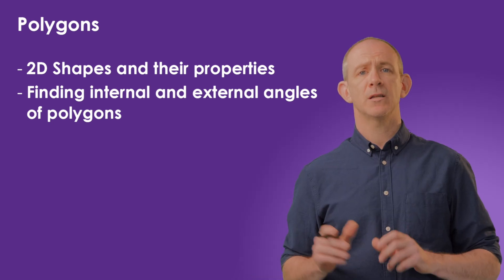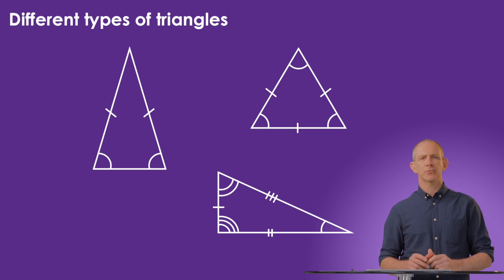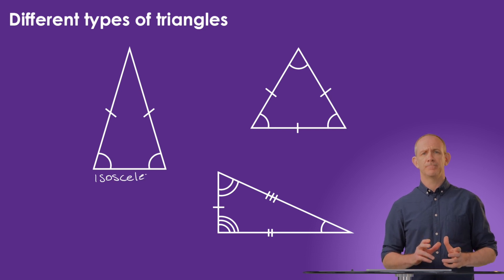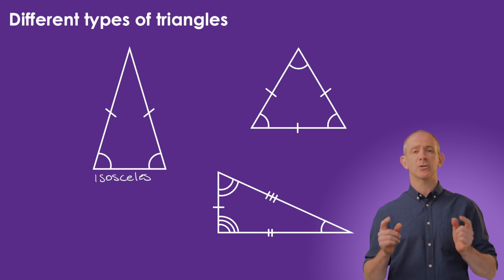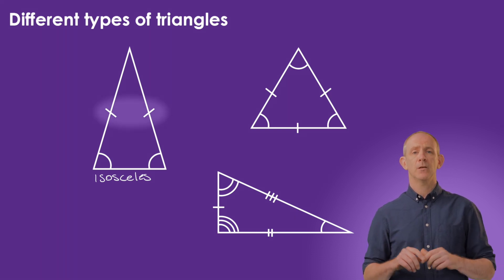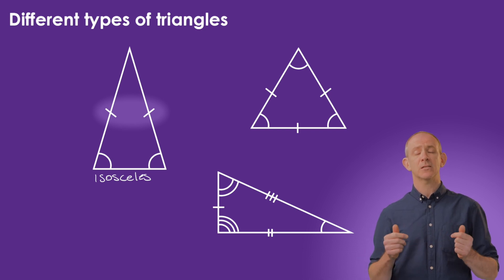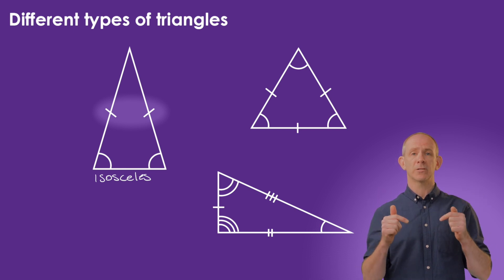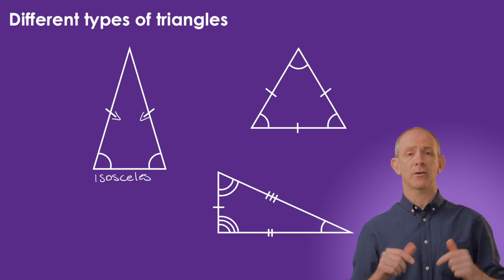Let's look at the properties of some very common shapes. Here we have three different types of triangles. Firstly, here we have an isosceles triangle. In an isosceles triangle, two of the sides are equal, and that's designated by the two notation marks on the lines. It's also true that the base angles of an isosceles triangle are equal — the angles that these two lines point at. I always like to think of these two lines as arrows pointing at the two angles that are the same.